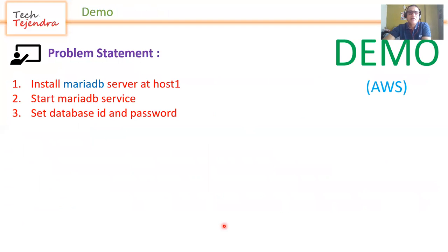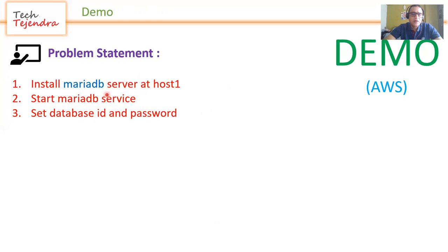Here is our problem statement, as in every video we solve an Ansible problem. In this tutorial we will: install MariaDB server on host one, start the MariaDB service, and set the database username and password.